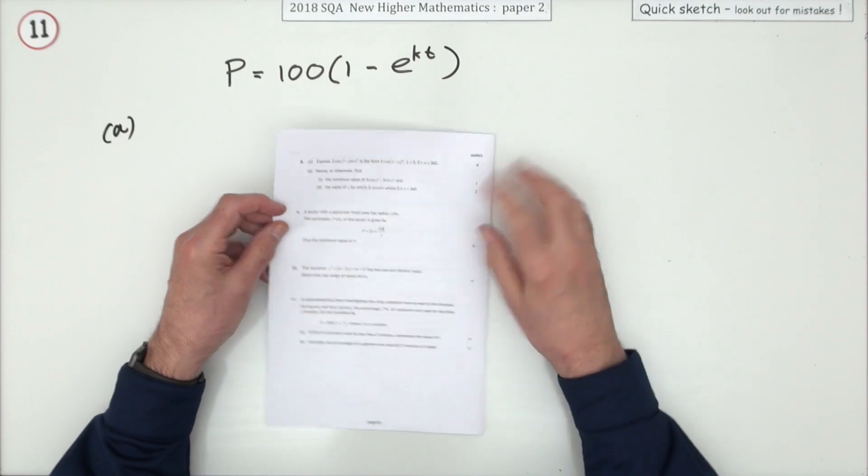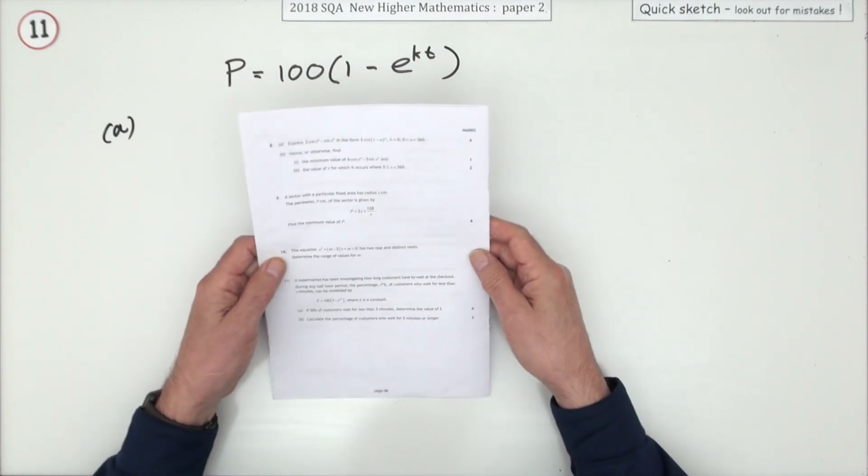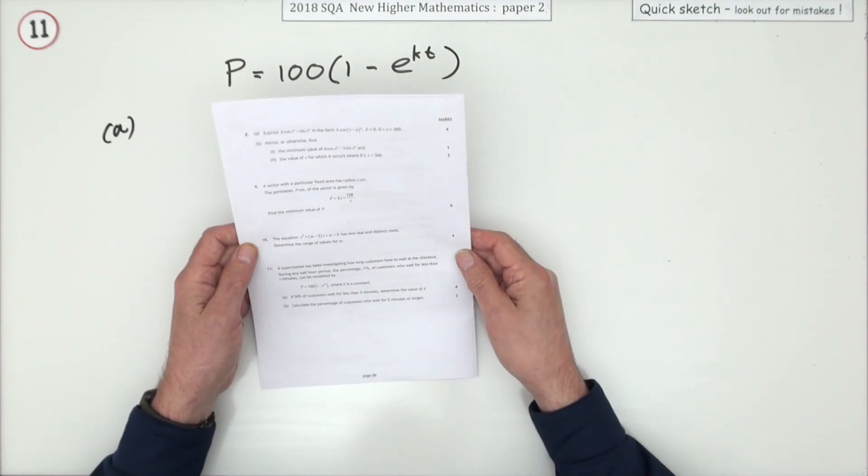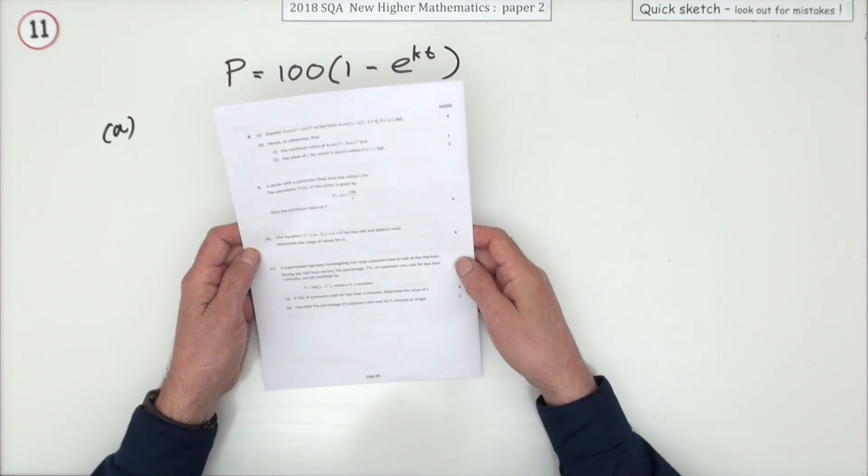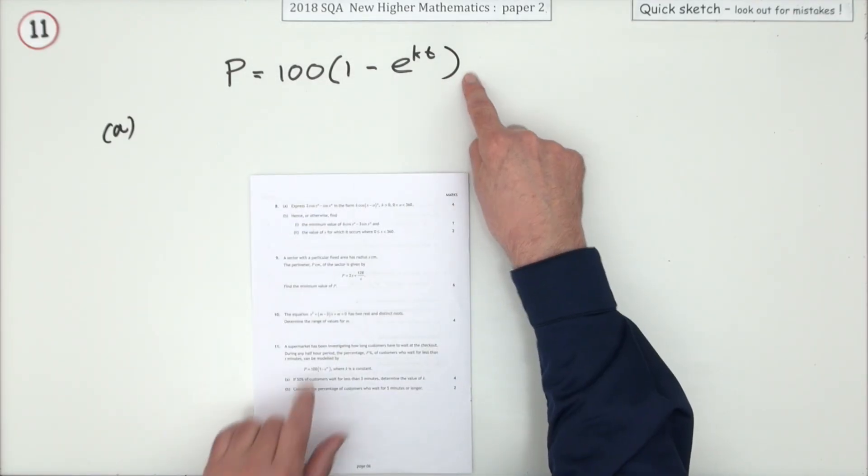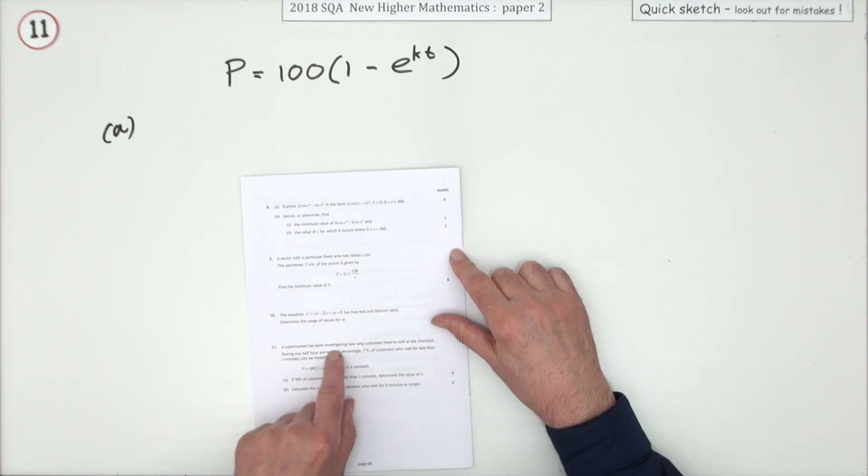Number 11 from Paper 2 of the 2018 New Higher Maths. It's the exponential equation question, the growth and decay question, six marks. This is meant to model a supermarket queue. A supermarket has been investigating how long customers have to wait at the checkout during any half-hour period.